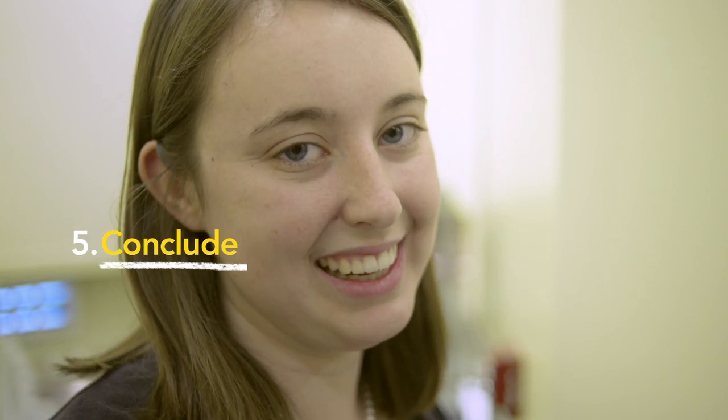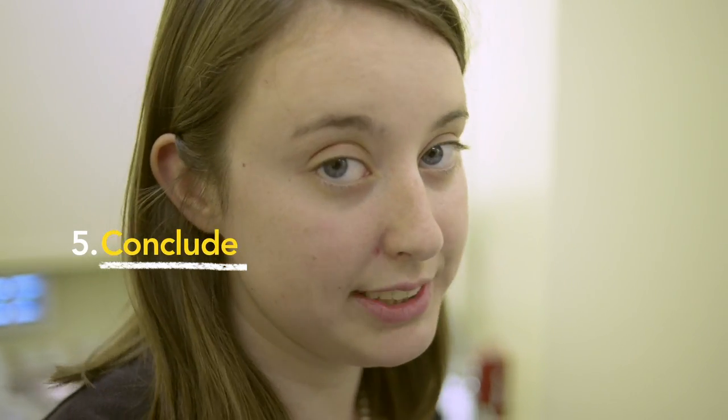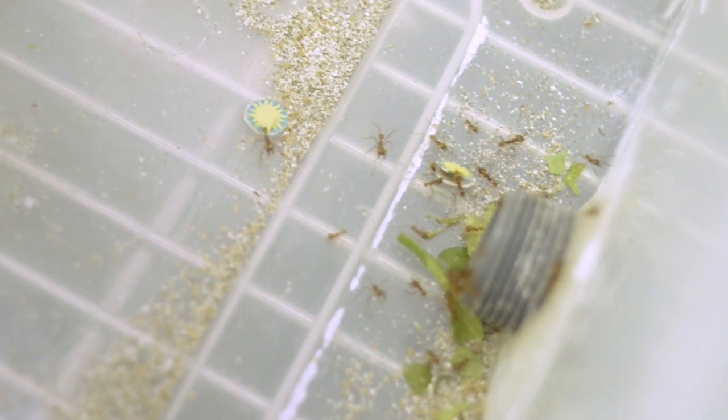Our conclusion is that leaf cutter ants prefer leaves. Specifically, they liked leaf two better than leaf one.